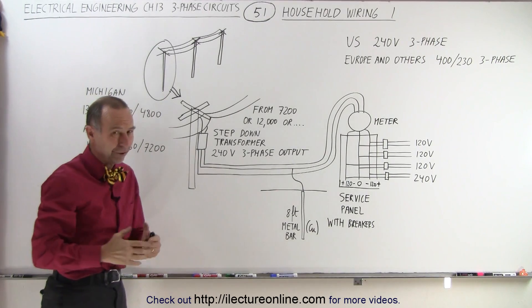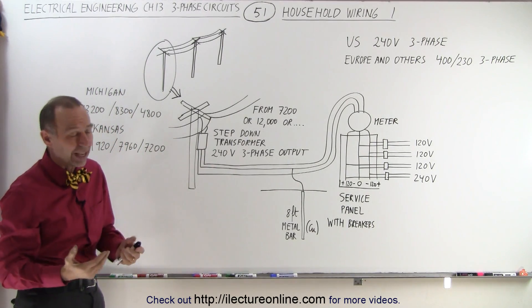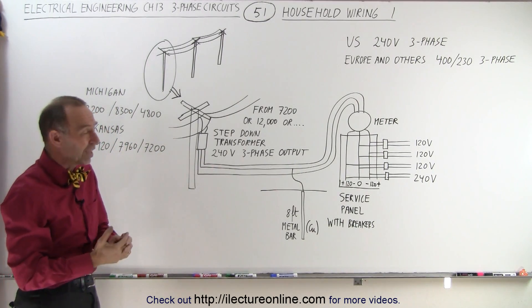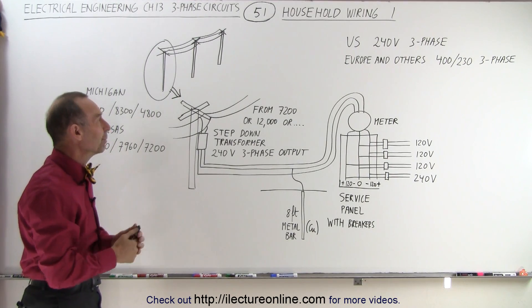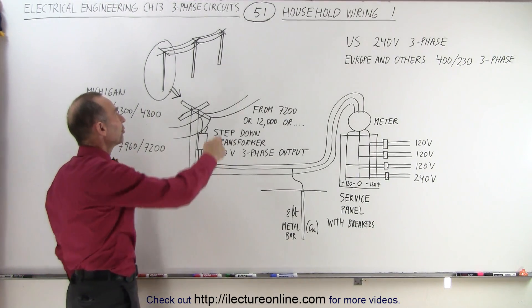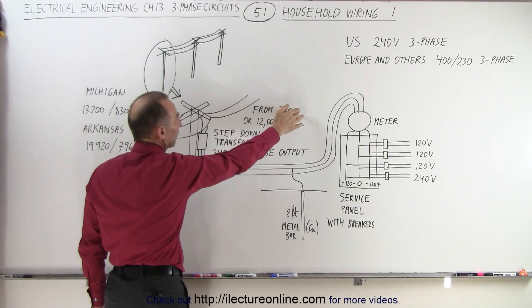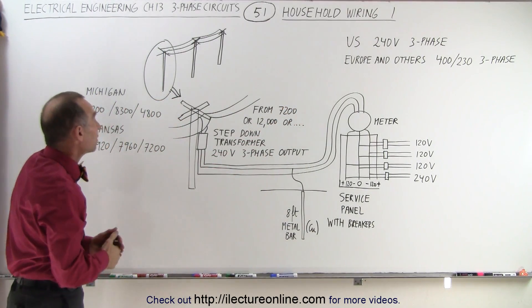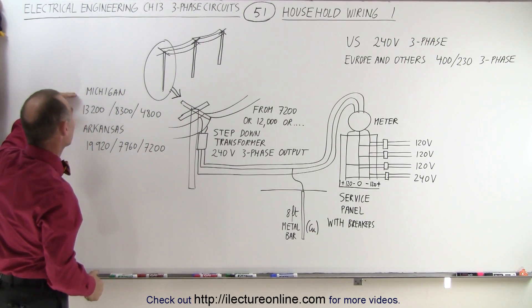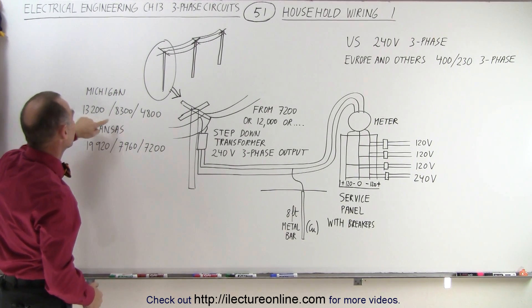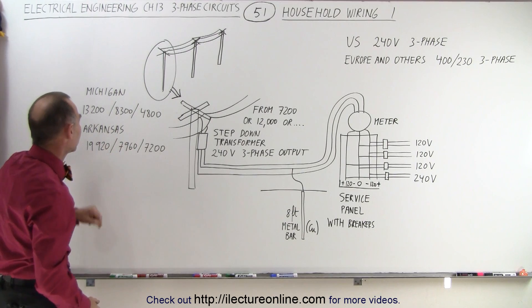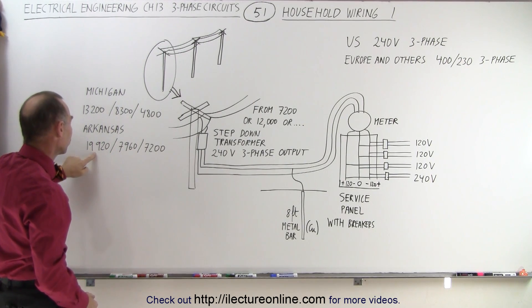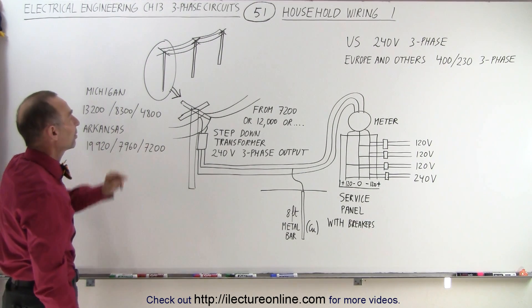The voltage on the lines outside varies quite a bit from state to state and from region to region. There's not an absolute uniformity to that. Typically the voltage on the lines outside could be as much as 7,200 volts or even 12,000 volts or even higher. In Michigan the voltage can be 13,200, 8,300, or 4,800. In Arkansas it can be almost 20,000, 7,960, or 7,200.